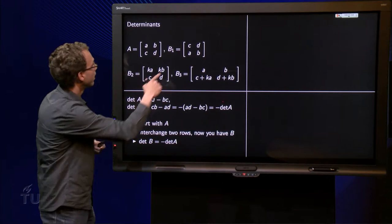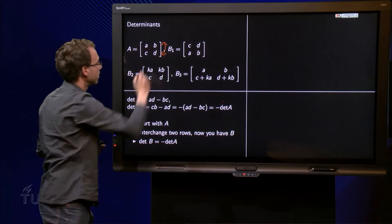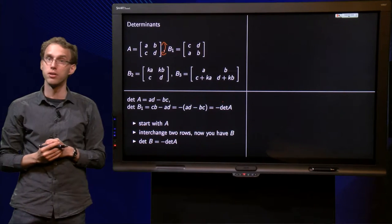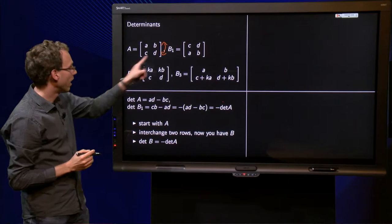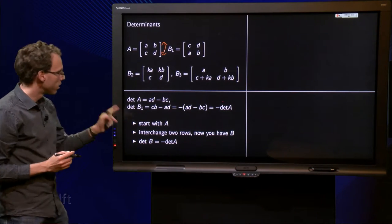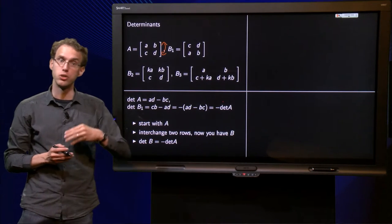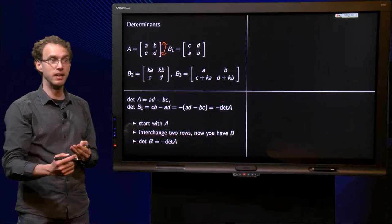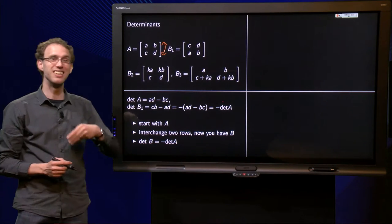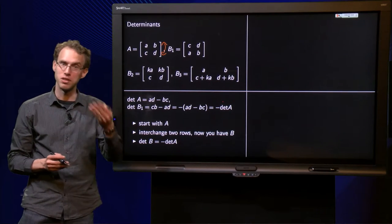So the determinant of B1 equals minus the determinant of A. But how did we get B1 out of A? Well, as you see, we changed the two rows of A and then we got B1. So what did we do? We started with A, we interchanged two rows, then we got B. That means that we get the determinant of B by taking minus one times the determinant of A.